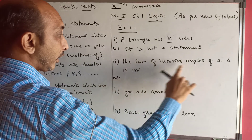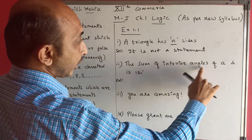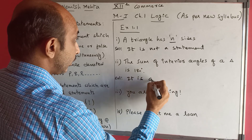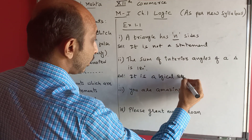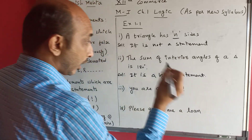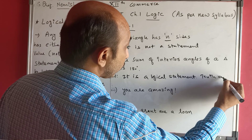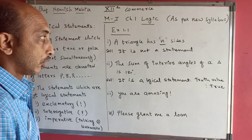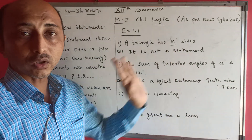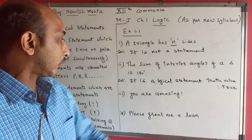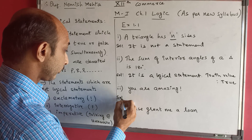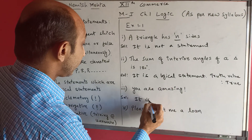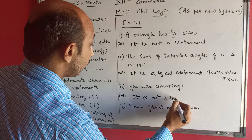The sum of interior angles of a triangle is 180 degrees - so it is a logical statement, and this logical statement has a true value. Remember: a logical statement's answer is either true or false. Next: 'You are amazing!' - this has an exclamatory sign, so it is not a statement, it is not a logical statement.